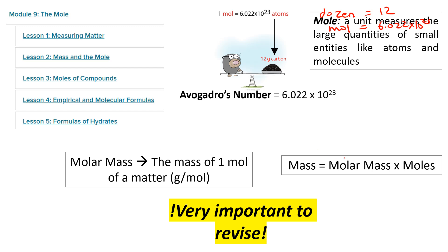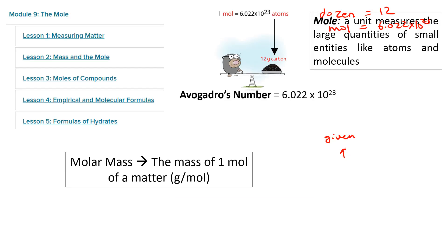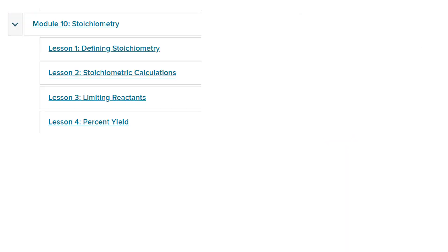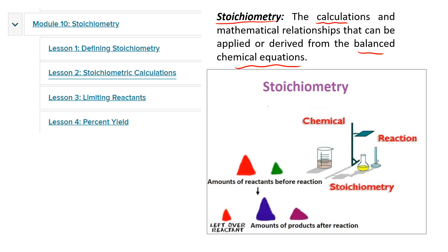The molar mass is given to you most of the time, or you can find it in the periodic table. After that we went to stoichiometry, where we integrated concepts from modules 8 and 9. We used chemical reactions and mole calculations together. The calculations from a balanced chemical equation are called stoichiometry. You learn how to calculate how many moles or how many grams you will have after a certain reaction. We learned about the limiting reactant, excess reactant, percent yield, and so on.